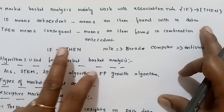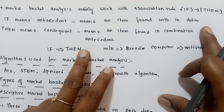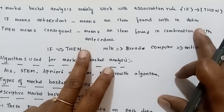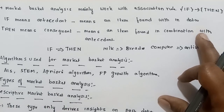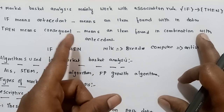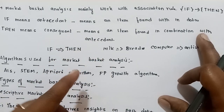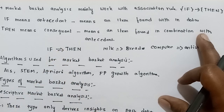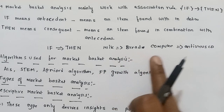If it means an antecedent, then it will have a consequent. It means the items found within our data. For example, milk is the antecedent, and the consequent is the item found in combination with the antecedent — for example, bread. If milk is the antecedent, then bread is the consequent.